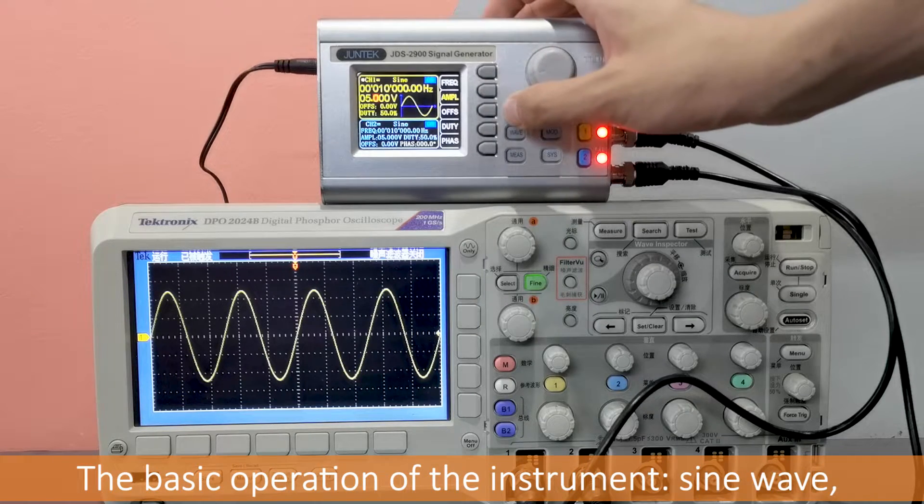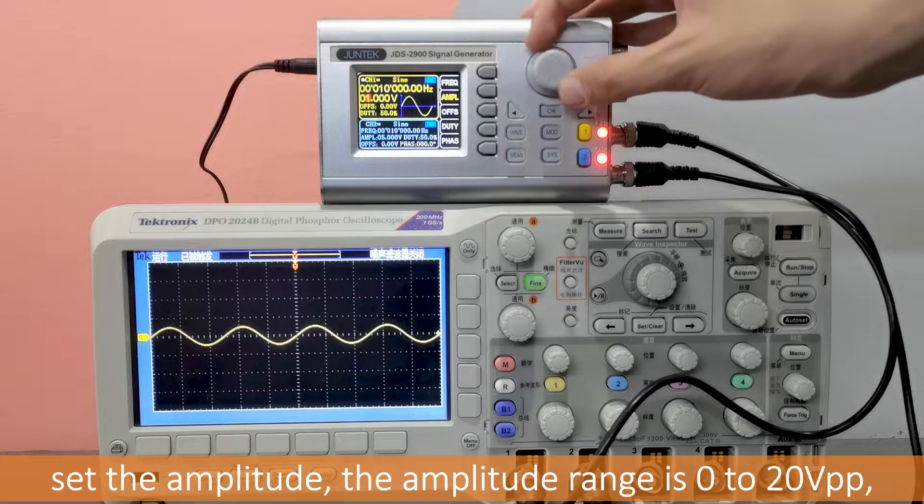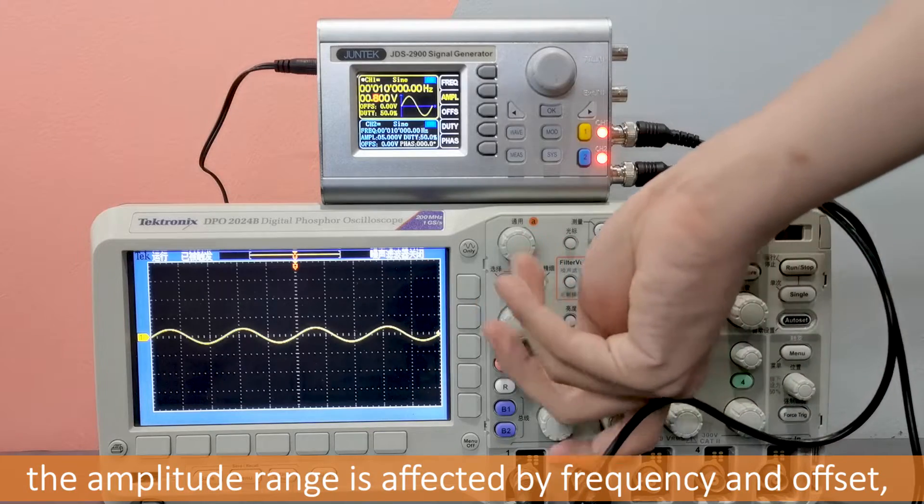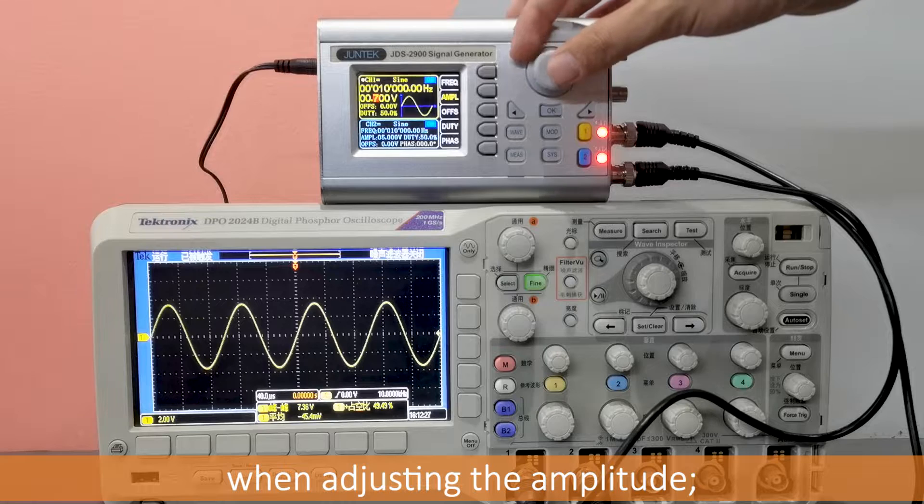The basic operation of the instrument, sine wave. Set the amplitude. The amplitude range is 0 to 20 VPP. The amplitude range is affected by frequency and offset, you can see the change of the waveform when adjusting the amplitude.